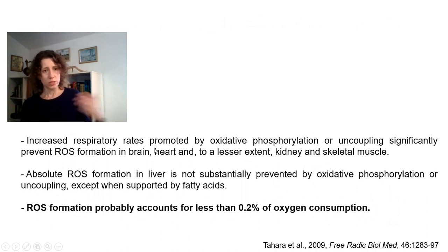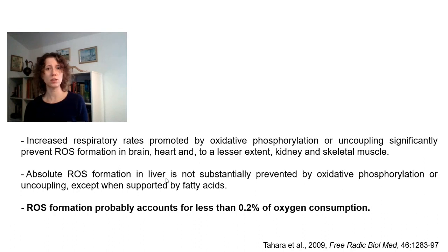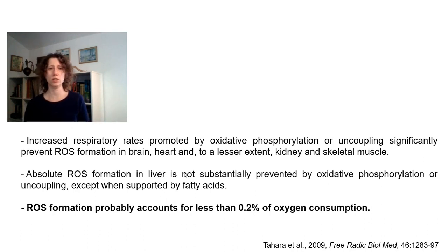Mild mitochondrial uncoupling is really a very effective antioxidant strategy because it prevents oxidant production by slightly increasing electron transfer rates. This effect is very important in most tissues, but in liver it's not quite as important, probably because mitochondrial membrane potentials in liver are lower to begin with. It is important in liver, however, when respiration is supported by fatty acids, which is a common physiological situation.